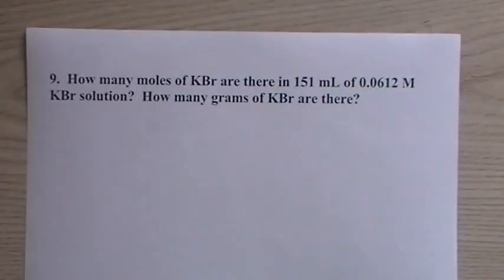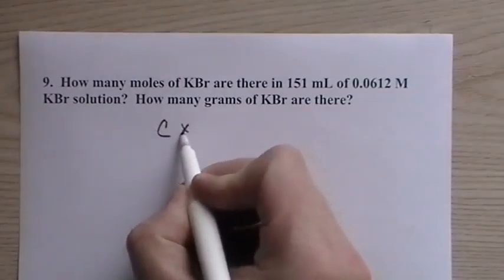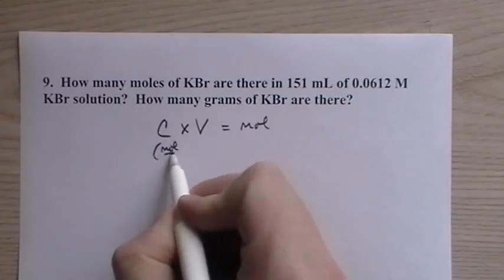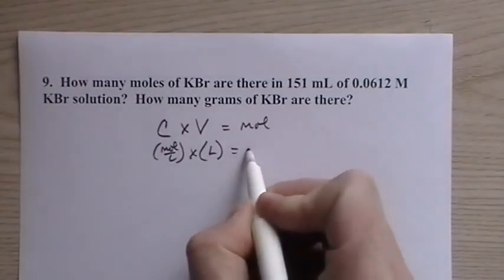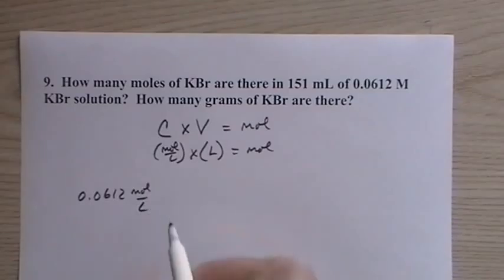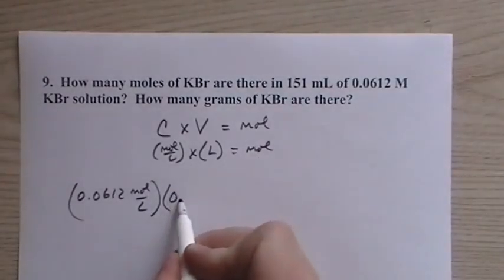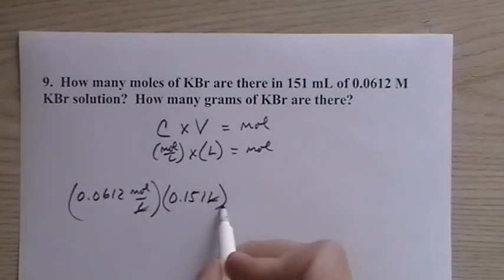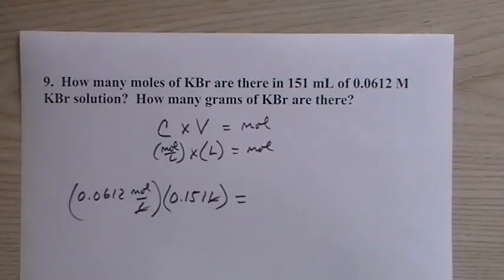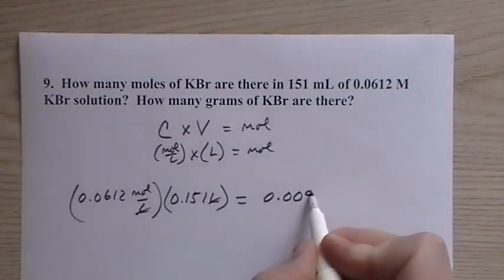How many moles of KBr are there in 151 mL of 0.0612 molar KBr? So we have the concentration times the volume is going to give us moles. The concentration is in moles per liter. The volume has to be in liters, and that gives us moles. Now, the concentration is moles per liter. They have 0.0612. Instead of having the capital M, I'm going to break it up into moles per liter. The volume is 151 mL, but we need to have it in liters if we're going to convert. So you see the liters, the concentration times the volume. The liters cancel, and we're left with moles. And what that tells us is how many moles there are of this concentration in 151 mL, 0.00924 moles.